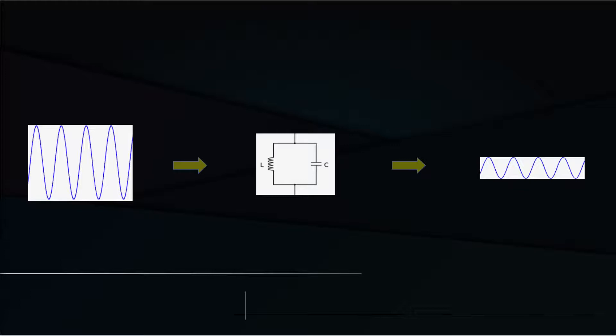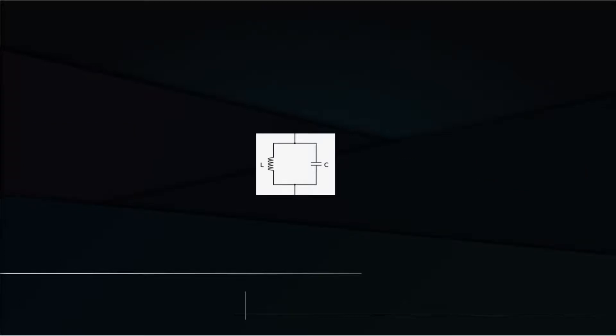But converting the signal to DC is something for another video. Today we will concentrate on the passband filter, or as it is named in the theremin jargon, the Volume Resonant Circuit. Let's take a look at its schematic.